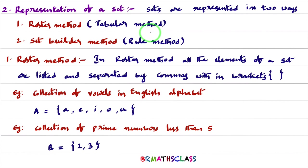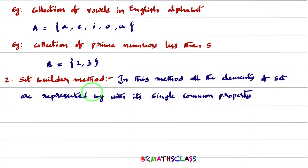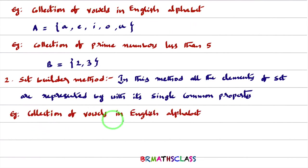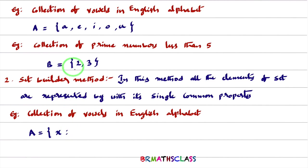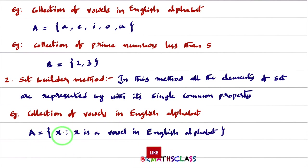Now we will understand the set builder method. In this method, all the elements of a set are represented with a single common property. For example, take the collection of vowels in English alphabet. In set builder method, we represent it as: A = {x : x is a vowel in the English alphabet}. All the elements of this set share the common property that x is a vowel in the English alphabet.